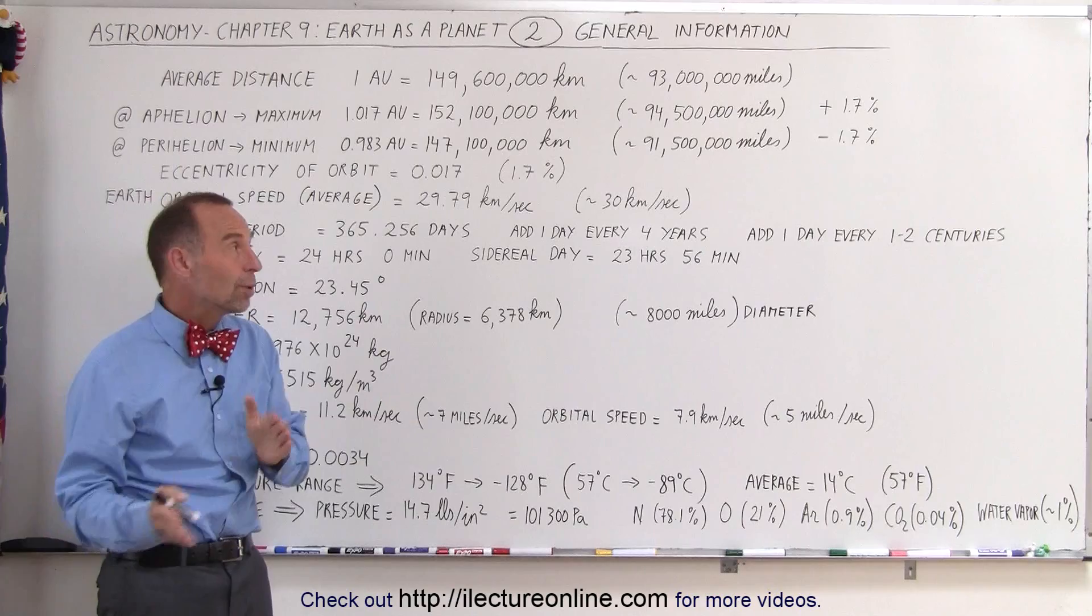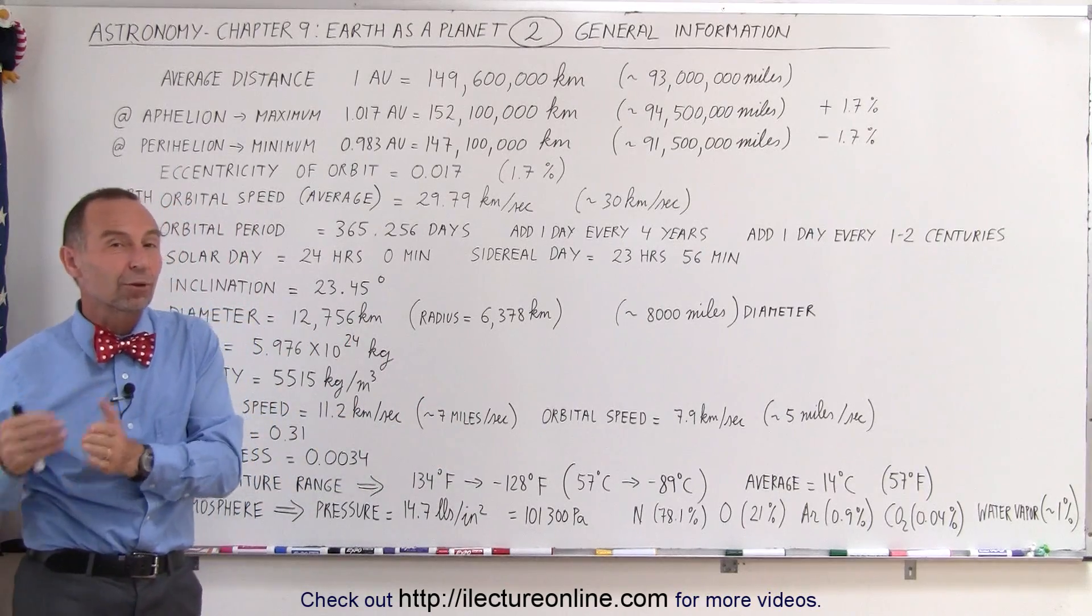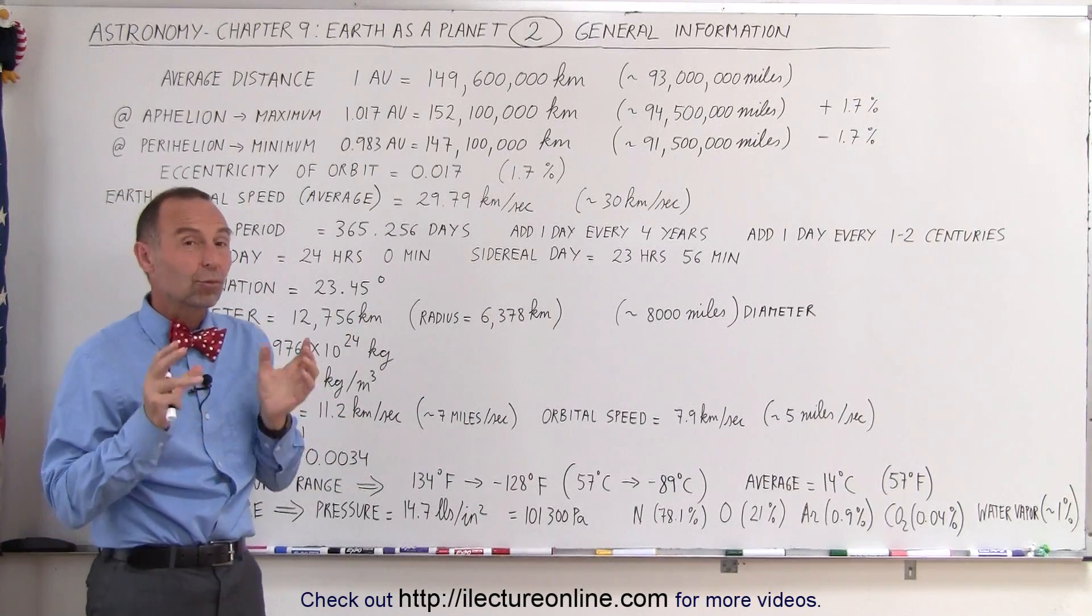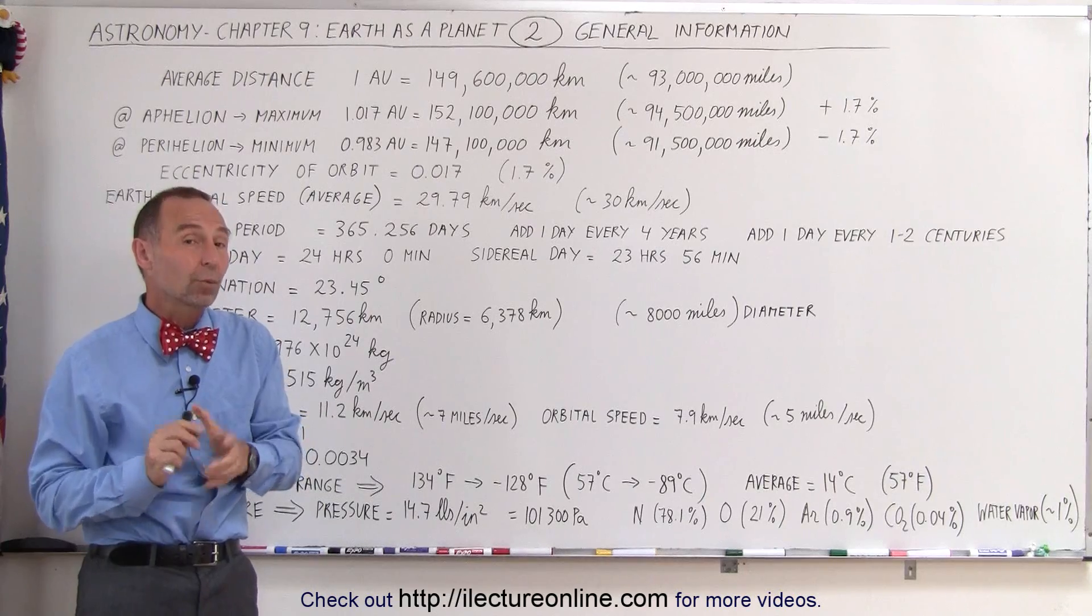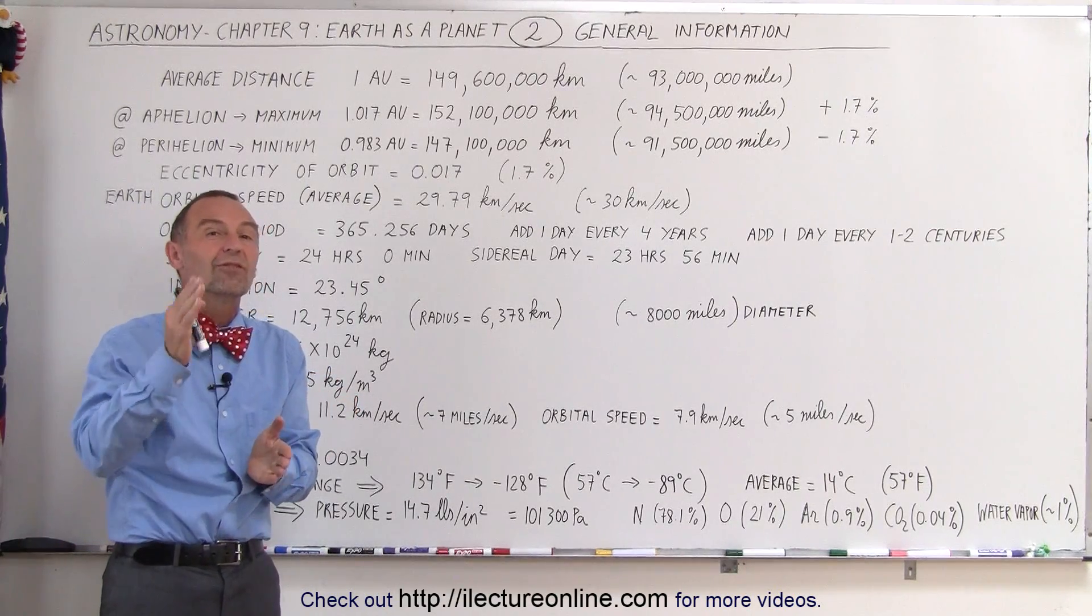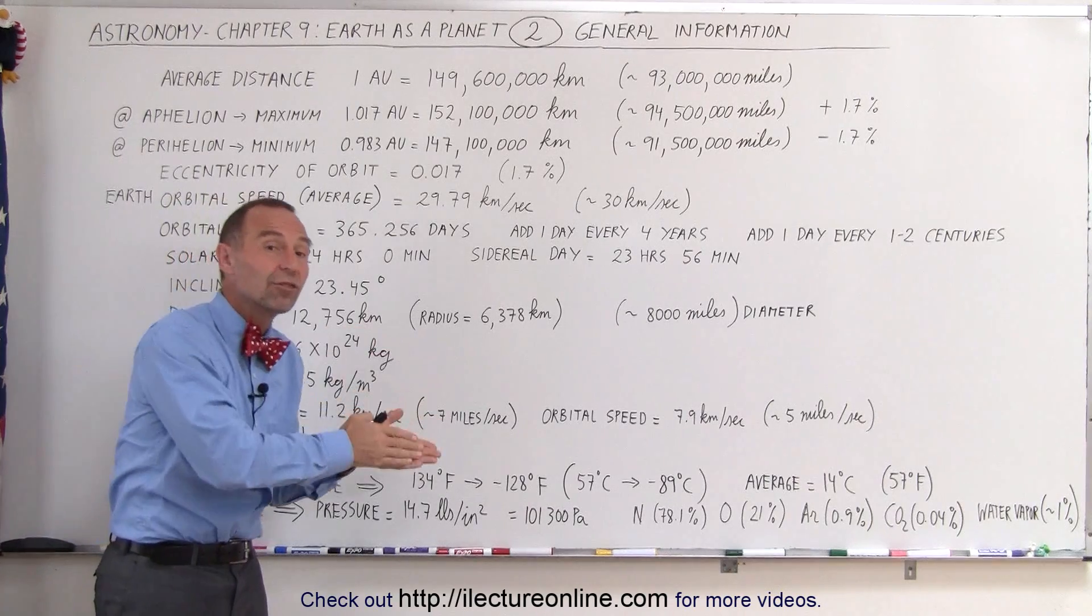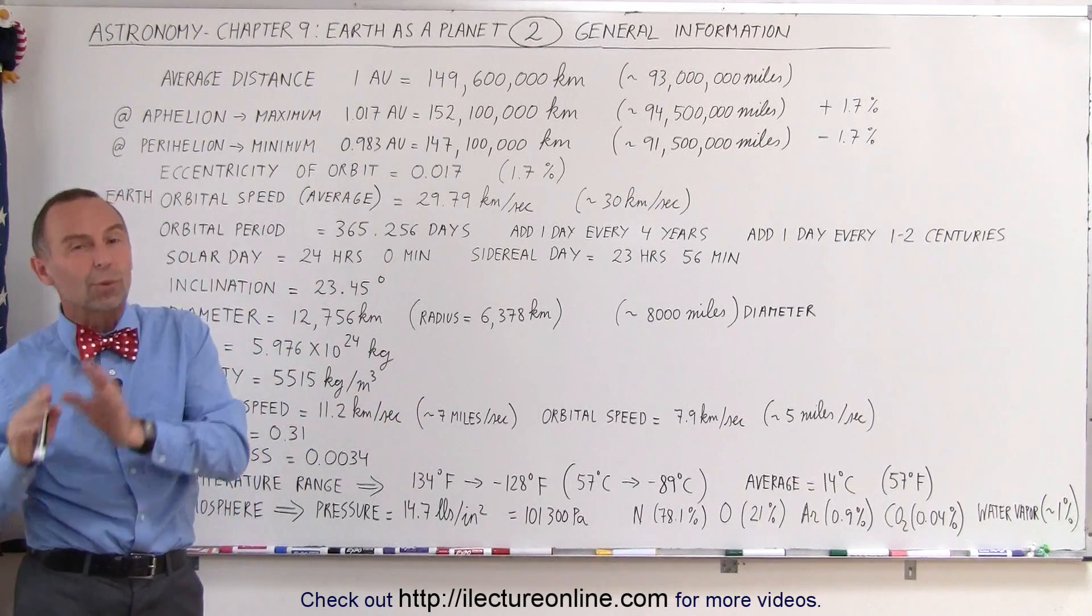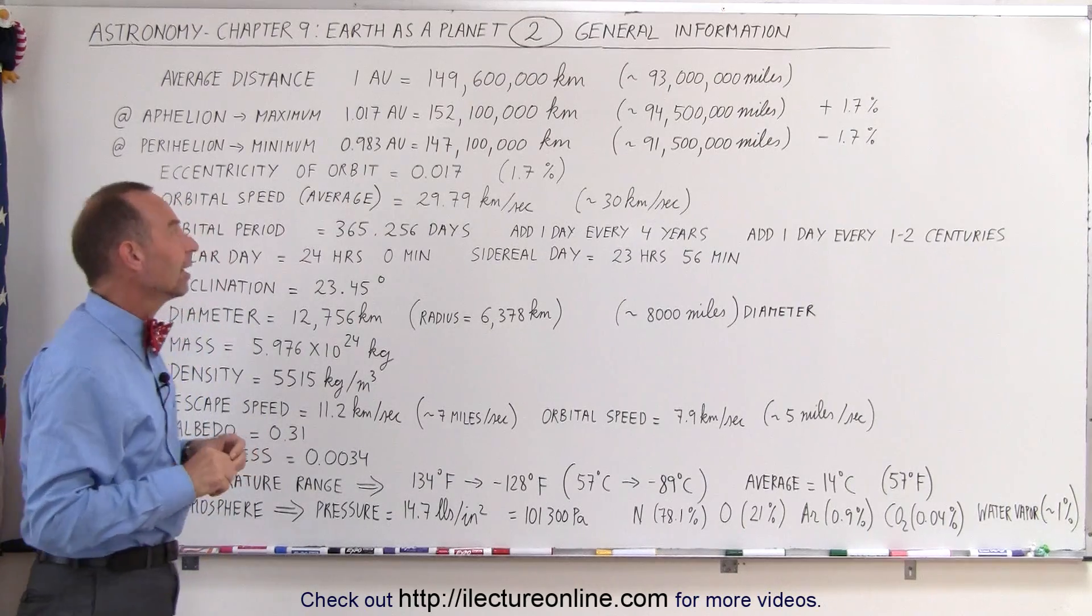Notice there's actually quite a difference between the maximum and minimum distance between the Earth and the Sun. And so then it's about 91.5 million miles, so about 1.7% closer from its average value. So the percent difference between the maximum and minimum distance from the Sun to the Earth is 3.4%, which is quite significant, which means when it's closer, it receives quite a bit more energy from the Sun than when it's farther away. And we'll show you some videos on how to calculate that.